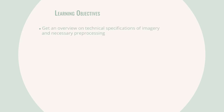You already know about the vegetation traits we are interested in and how to collect reference samples in the field. So in this lesson, I will give a brief overview of the technical specifications of imaging spectroscopy data and some necessary pre-processing before we dive deeper into methodological aspects. You'll get an overview of which methods are generally applied in an agricultural context.